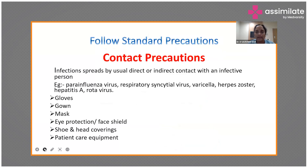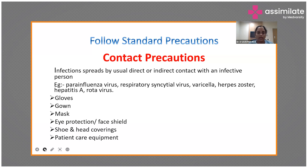Standard precautions are followed irrespective of the disease, while specific precautions apply to specific diseases or agents. For contact precautions, infection spreads by direct or indirect contact with an infected person. Examples of diseases requiring contact precautions include parainfluenza virus, respiratory syncytial virus, varicella, herpes zoster, hepatitis, and rotavirus.